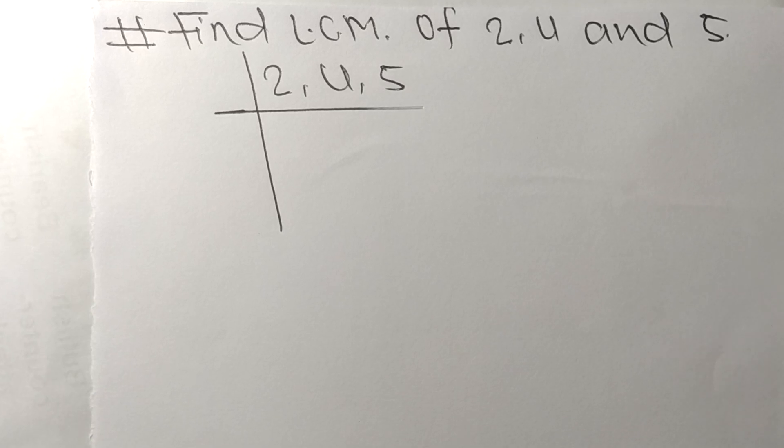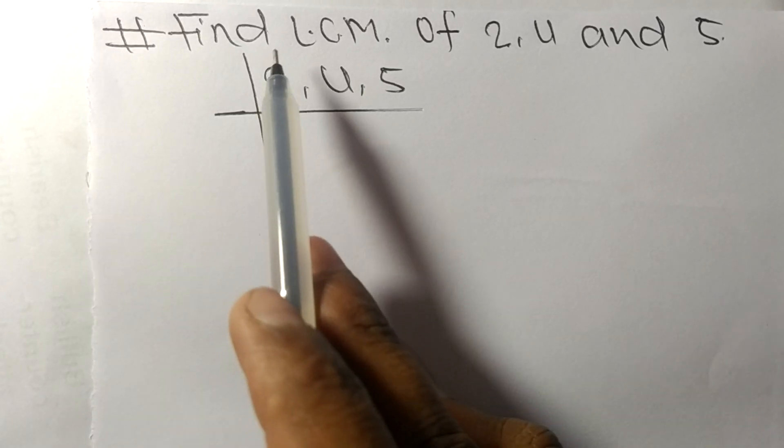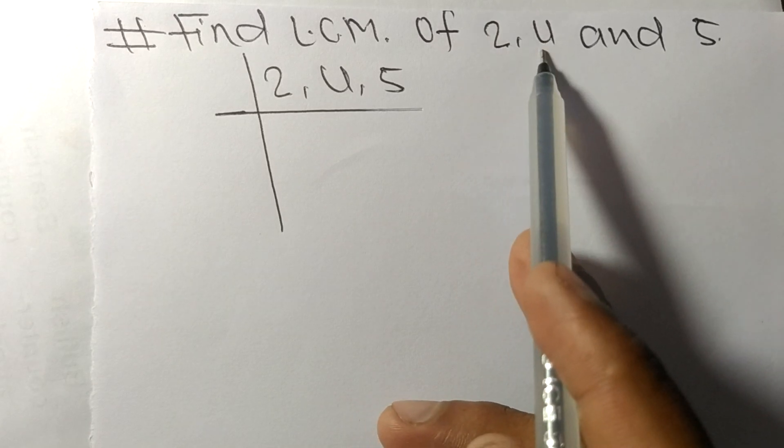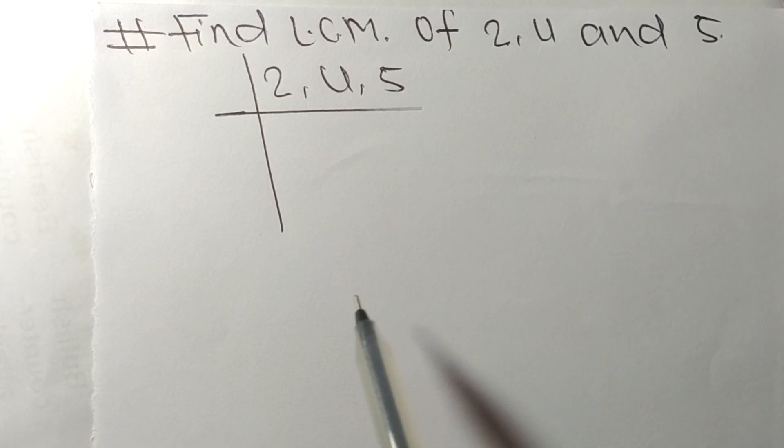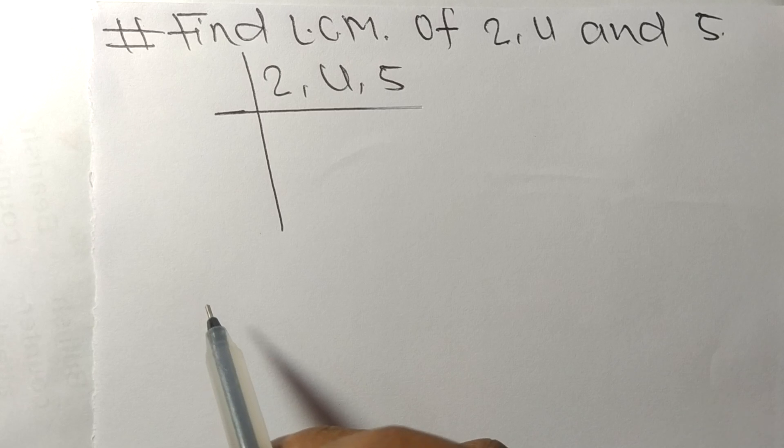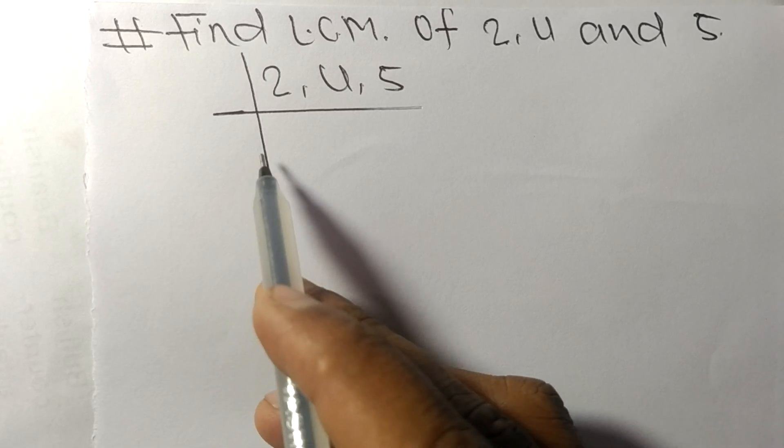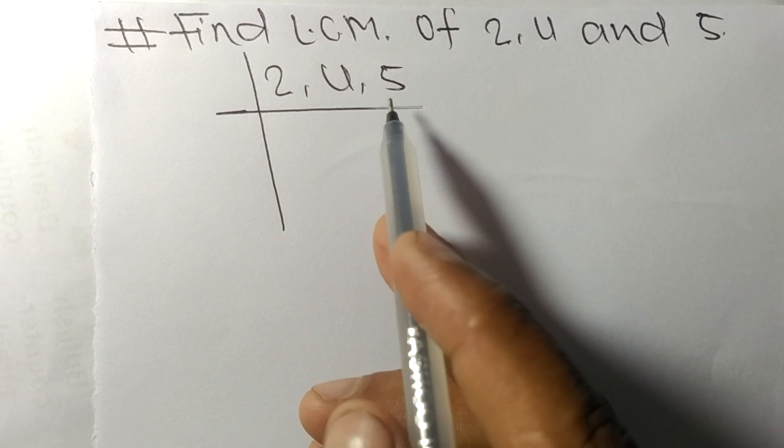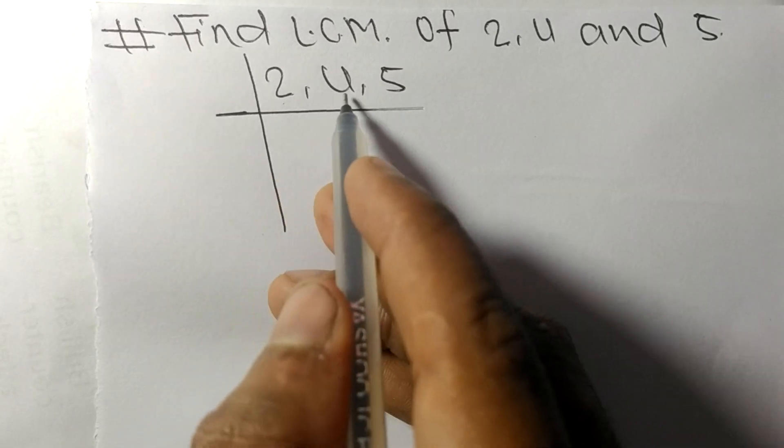So today in this video we shall learn to find the LCM of 2, 4, and 5. To find LCM, we have to choose the lowest number that can exactly divide 2, 4, and 5. So 2 and 4 are exactly divisible by 2.